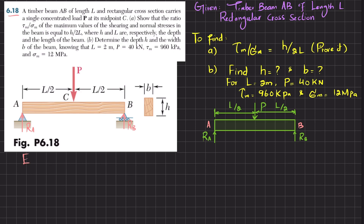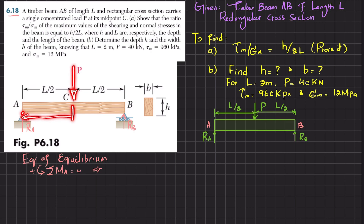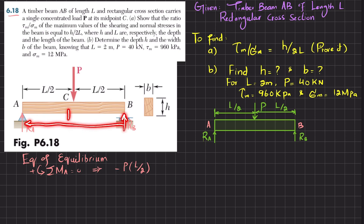We will use equations of equilibrium. Taking the sum of all moments about point A equal to zero, with counterclockwise moments as positive. The moment due to load P at distance L/2 is clockwise, so: -P × (L/2) + RB × L = 0. From here, RB = P/2.